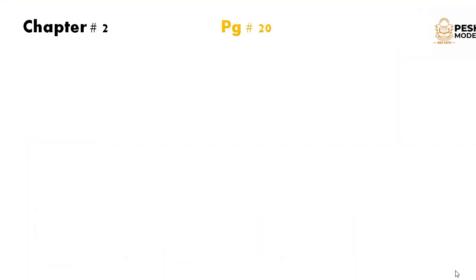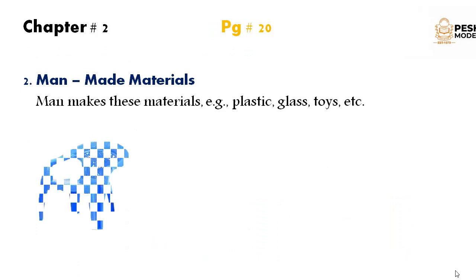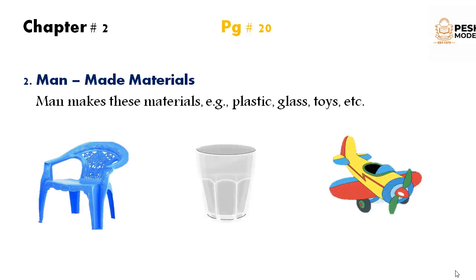Now we will move towards man-made materials. Man-made materials are made by humans in factories. For example, plastic, glass, and toys. This chair is made up of plastic, and plastic is made by man in factories. Glass is also made in factories by man with the help of different chemicals. Toys are also man-made — they are made in factories with the help of different chemicals or plastic.